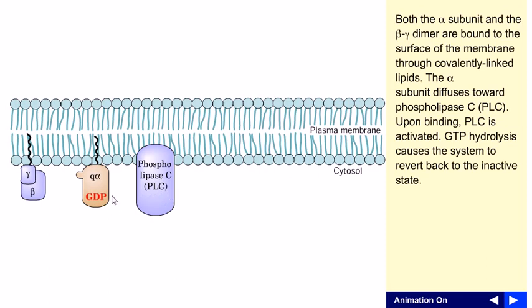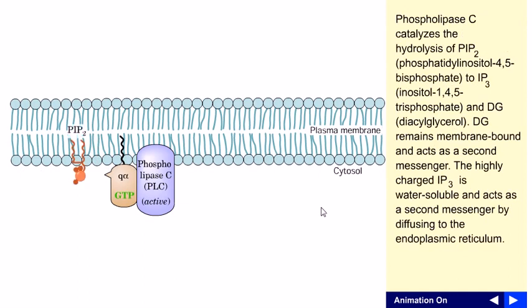GTP hydrolysis occurs and GTP is converted into GDP. Phospholipase C is activated and the alpha subunit returns to its previous GDP-bound or inactive state. This alpha subunit can go and attach with the beta-gamma subunits to form the heteromeric G protein again to carry out further rounds of this process.